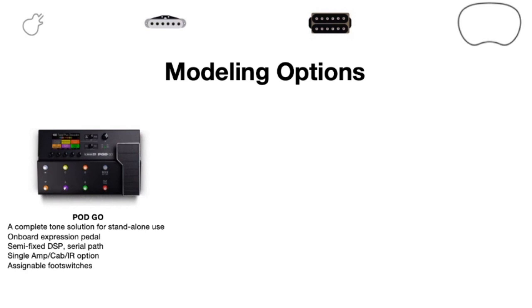Line 6 offers some different modeling options. Today I was using the Pod Go, which is a complete tone solution for standalone use. It has an onboard expression pedal, a semi-fixed DSP path in a serial chain — meaning all your effects and amps are in just one chain, nothing branching off. You have the option of running a single amp, cab, or IR, and then assignable foot switches. So you can really show up to a gig with your guitar and a Pod Go, plug into the house PA, and that's all you would need.